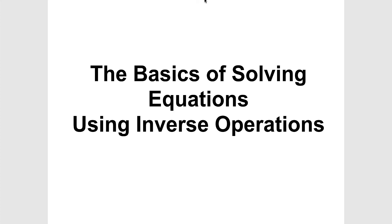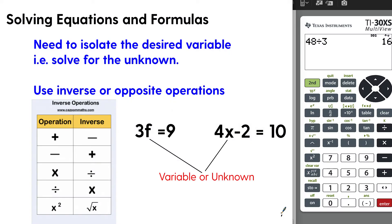This video explains the basics of solving equations using inverse operations for the math GED. When it comes to solving equations and formulas on the GED, you need a process to isolate the desired variable — in other words, you're solving for the unknown. For example, in 3f equals 9, f is the variable, and in 4 times the unknown minus 2 equals 10, x is the unknown we want to find.